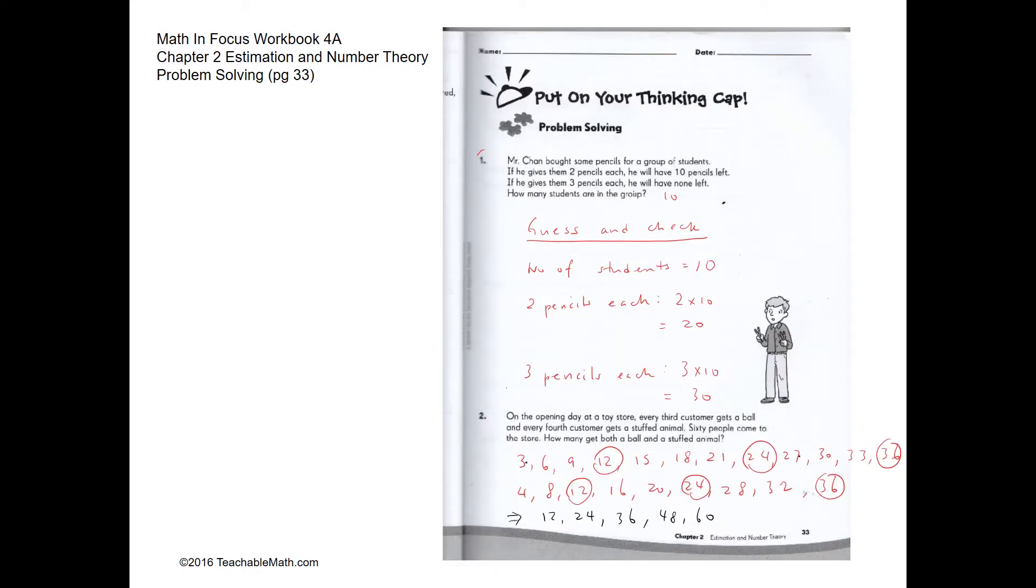Question 1. We're using guess and check. Mr. Chan bought some pencils for a group of students. If he gives 2 pencils each, he will have 10 pencils left. If he gives 3 pencils each, he will have none left. How many students are in the group? We're guessing that there are 10 students and there are 30 pencils.